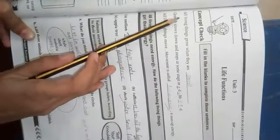Fill in the blanks to complete these sentences. First one is, all living things grow when they are small.